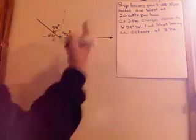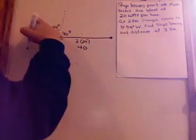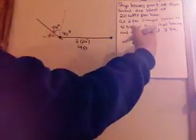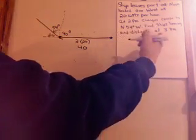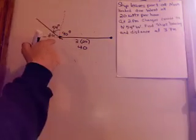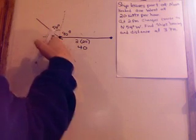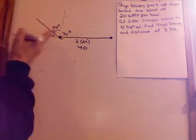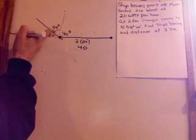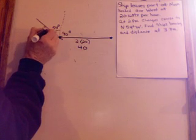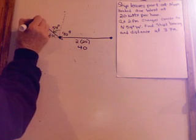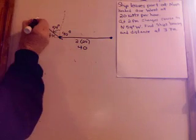All right. So here we are. So at 2 p.m., change his course. Now, we're headed this far, and find the ship's bearing in distance at 3 p.m. So if I started at 12, 2 hours this way, it's 2 o'clock. At 3 o'clock, I'm up here. So what distance do you think this is? Going 20 knots per hour for 1 hour. So this distance is 20, and here I am. Here's the end point.